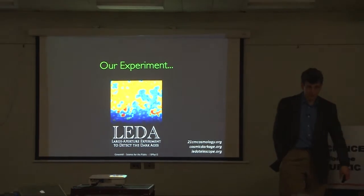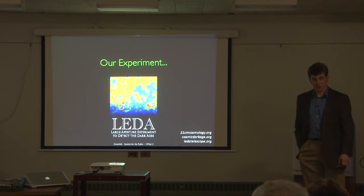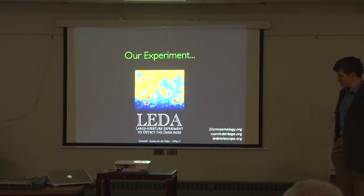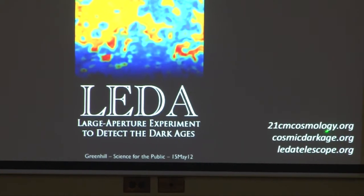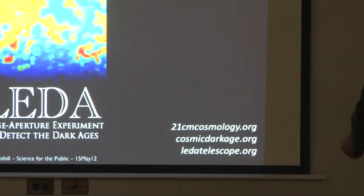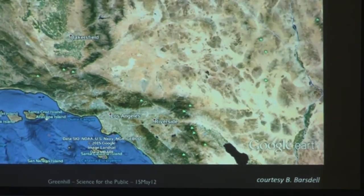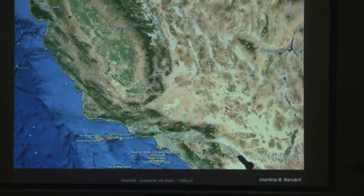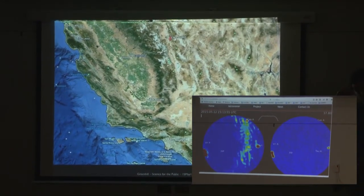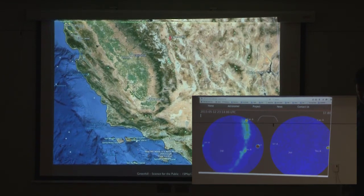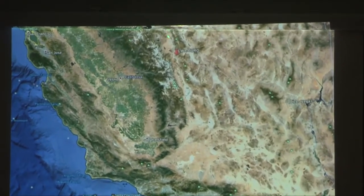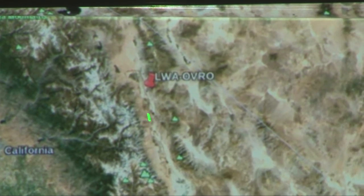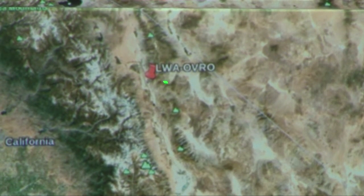I'd like to focus on what we've been doing. We have an experiment called the Large Aperture Experiment to Detect the Dark Age, which is a rather strained acronym since we had to drop two words in order to make it work. However, we have websites, so 21-centimeter cosmology, or more usefully, maybe cosmicdarkage.org. Our experiment is sited in California with another location in New Mexico.